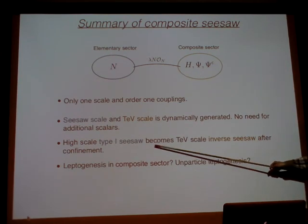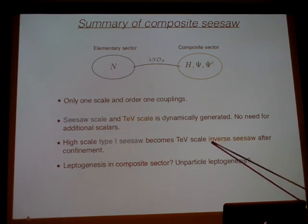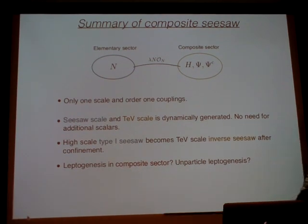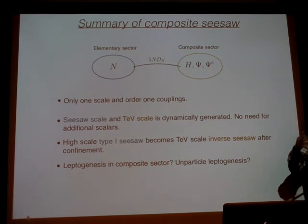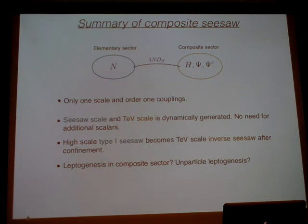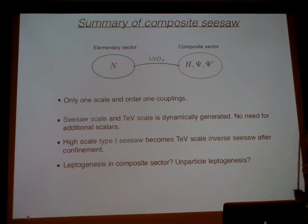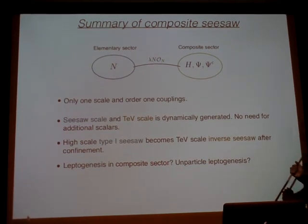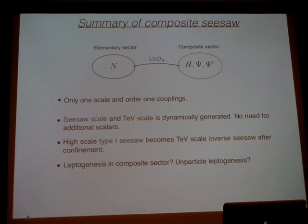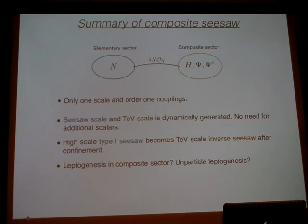The hybrid seesaw can be matched to the composite seesaw: the composite operator corresponds to the ψ singlet, and the ratio of scalar VEVs in the hybrid seesaw is matched to the anomalous running factor in the composite seesaw. This explains the seemingly unnatural ratio of scalar VEVs in the hybrid seesaw as a natural consequence of anomalous dimensions in the strongly-coupled sector. The composite seesaw is more natural — there is only one UV scale, all UV parameters are order one, and both the seesaw scale and the TeV scale are dynamically generated. Leptogenesis directly in the composite sector is under investigation, possibly using unparticle physics to describe the deconfined phase at high temperatures.